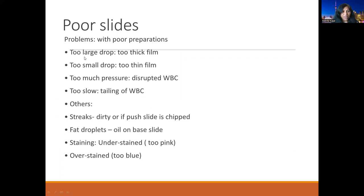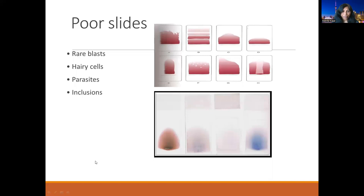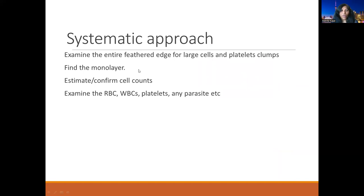If we don't have proper slides, those are poor slides. Poor slides can be caused by: a blood drop that is too large (making thick films), too small (making thin slides), too much pressure (disrupting cells), or being too slow (causing tailing of RBCs). Other problems include streaks, oily hands, and staining problems such as understaining or overstaining. With poorly made slides, we might miss blasts, hairy cells, parasites, and organisms.